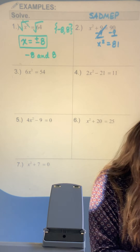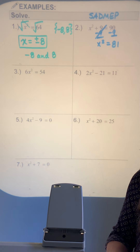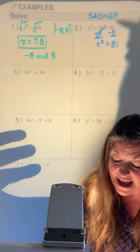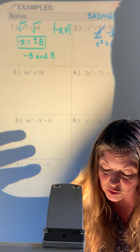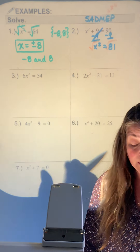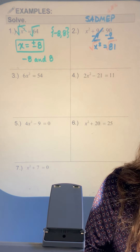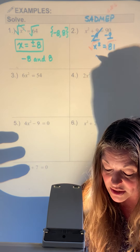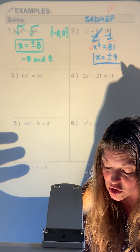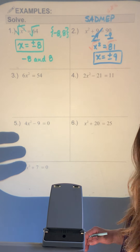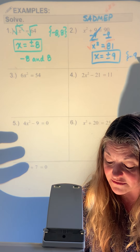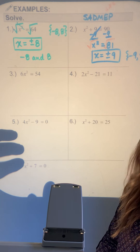It's a positive 9, so subtract it to the other side, leaving x squared equals 81. There's no division to do — no coefficient on x squared, no multiplication. So I'm ready to take care of x squared by square rooting. 81 is a perfect square, it's 9 — don't forget plus or minus.